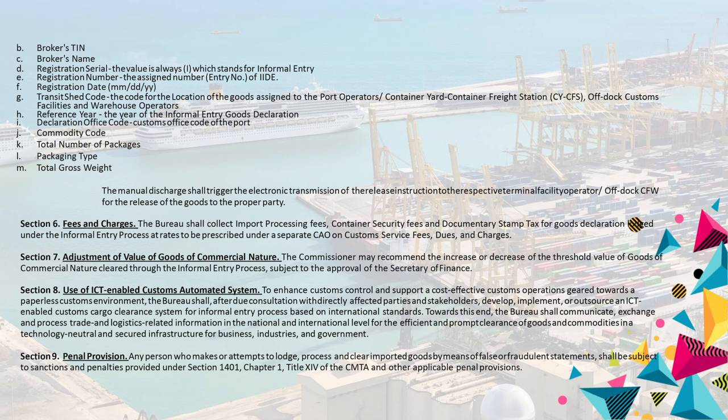Section 6. Fees and Charges. The Bureau shall collect import processing fees, container security fees and documentary stamp tax for goods declaration lodged under the informal entry process at rates to be prescribed under a separate CAO on customs service fees, dues, and charges.